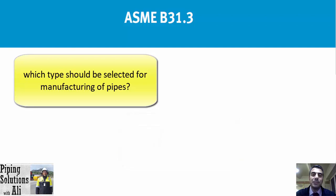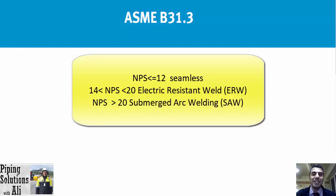You should get offers from manufacturers, suppliers, and radiographers to evaluate cost. Project limitations play an important role — availability and time for supply are critical and can determine which type of pipe is selected. In some cases you may order an expensive method to meet the project time schedule. As a recommendation: for low sizes (e.g., below NPS 12) seamless pipes are appropriate; for intermediate sizes (e.g., NPS 14 to 20) electric resistant weld (ERW) pipes; and for high sizes, submerged arc welding (SAW) pipes may be preferred. But you must evaluate all conditions to select the best option.